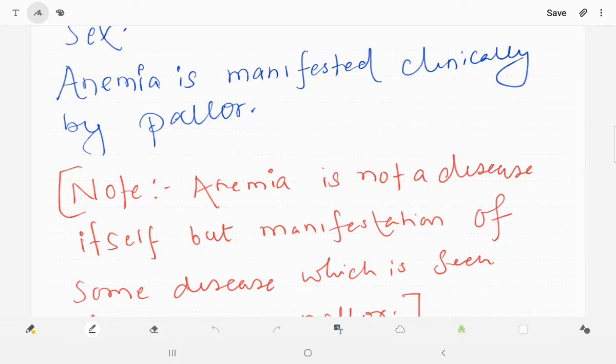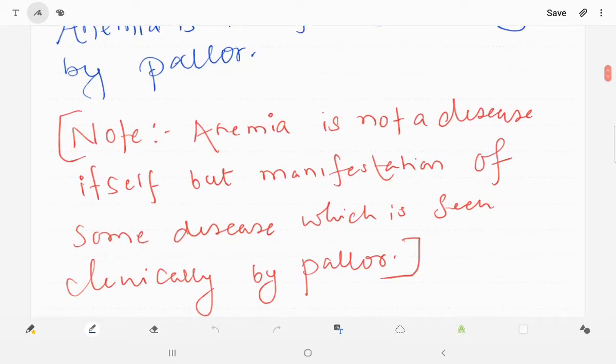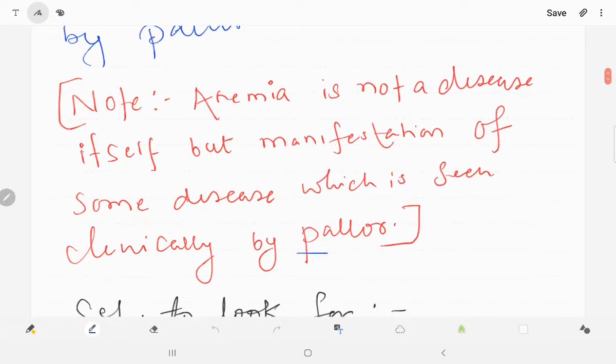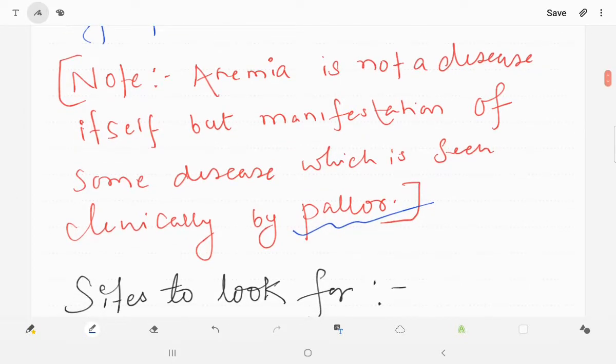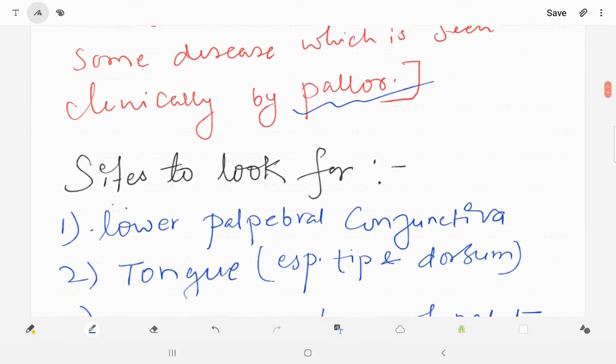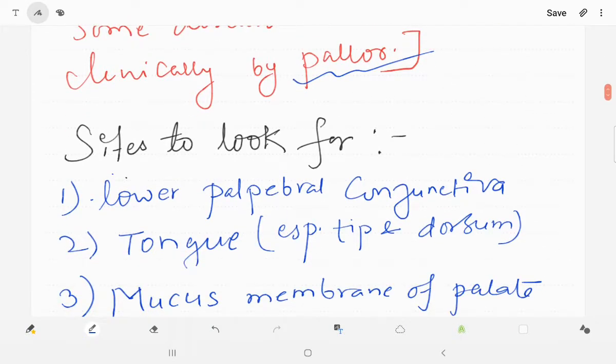Why are we studying anemia and pallor together? Anemia is manifested clinically by pallor. So the point that should be noted here is anemia is not a disease itself but manifestation of some disease which is seen clinically by pallor. That's why we are studying anemia and pallor together in this video.